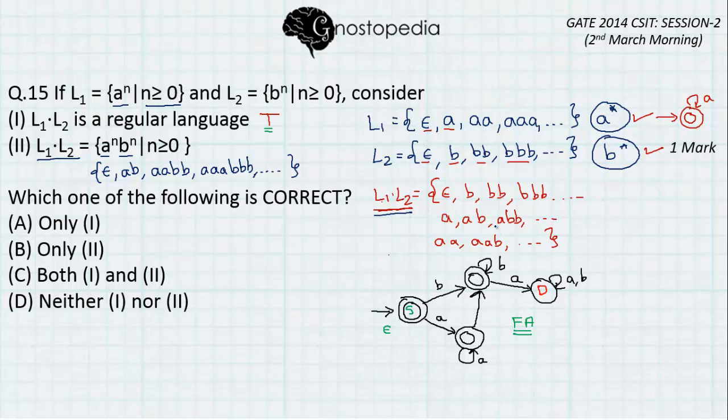Yeah, I agree that this language will contain equal number of a's followed by equal number of b's because cases like aa followed by bb but it is not exclusively equal number of a's followed by equal number of b's and hence this is false. So with this we get our answer as A that is only one is true. If you like the video, do subscribe and share it among your friends. Thank you.